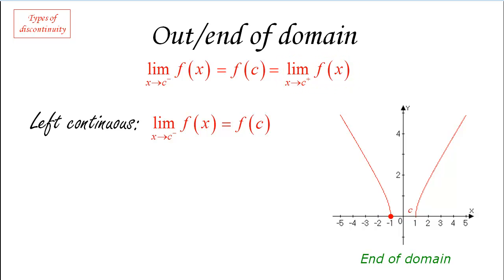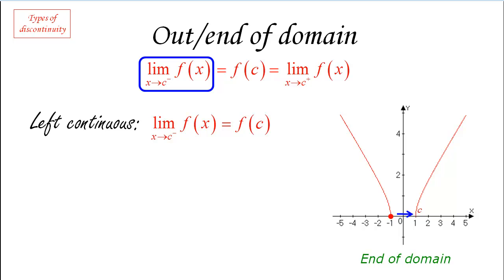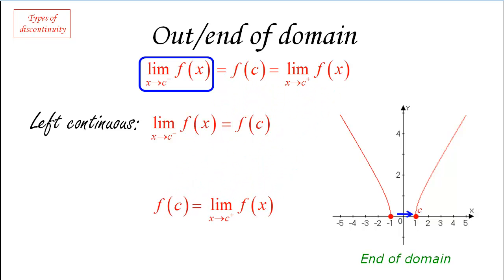If f(c) exists, then the left-hand side equation is satisfied and we have almost continuity — we call this left continuity. Similarly, if c is positioned so that we cannot compute the left limit but everything else is okay including f(c) existing, then the function is right continuous. These situations can be identified from the domain of the function, and the ideas of left and right continuity are occasionally used.